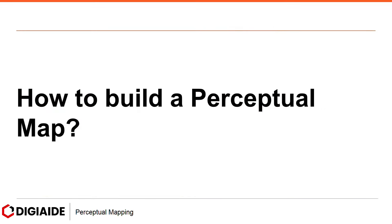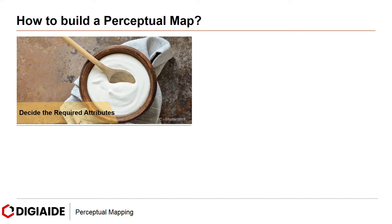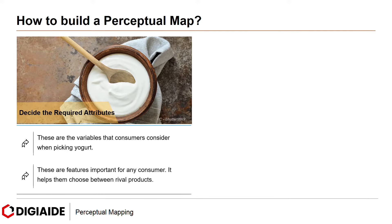Moving on to how to build a Perceptual Map. First, decide the required attributes. Let's take the example of selecting a yogurt. These are the variables that consumers consider when picking yogurt — features important for any consumer that help them choose between rival products.